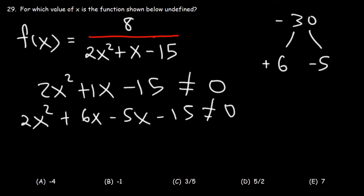Now let's factor by grouping. In the first two terms, let's take out the GCF, which is going to be 2x. 2x squared divided by 2x is x. 6x divided by 2x is 3. In the last two terms, let's take out the GCF, which will be negative 5. Negative 5x divided by negative 5 is x. Negative 15 divided by negative 5 is positive 3.